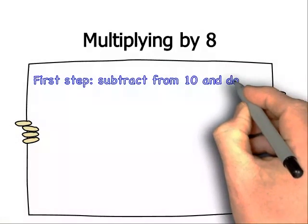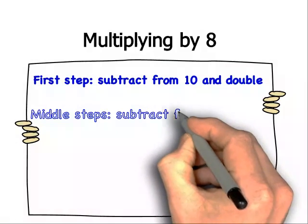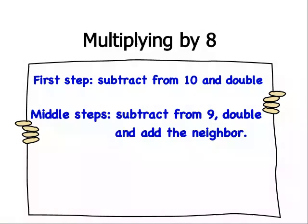First step: subtract from 10 and double. The middle steps: subtract from 9 and double what you get, then add the neighbor.